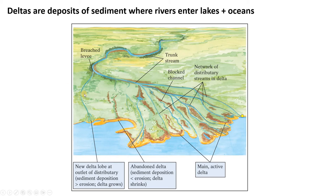Deltas are deposits of sediment where rivers enter lakes and oceans. Rivers have current — that water is moving very quickly and is able to move grains of sand, pebbles, or even cobbles. So rivers are competent to move sediment. However, when they hit lakes and oceans there's no current, so they're forced to drop that sediment right there. Sediment builds up at the mouths of rivers. Deltas are also characterized by a complex network of meandering and anastomosing channels.